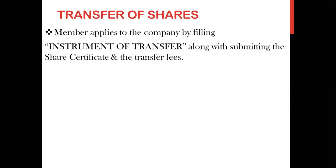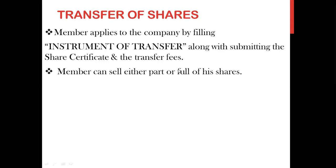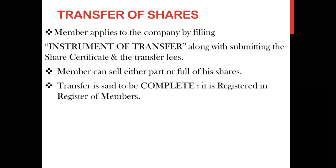Transfer of shares involves a certain procedure. The member has to apply to the company by filling the instrument of transfer, along with submitting the share certificate and the transfer fees. The member can sell either part of his shares or all of them — the decision lies with the member. The transfer is said to be complete only when it is registered in the register of members. Just as with allotment of shares, the secretary has to file it with the Registrar of Companies.